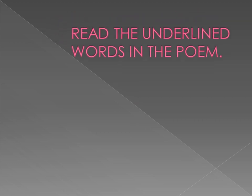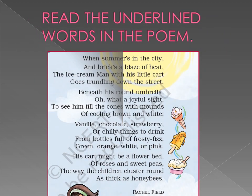Let us read the poem again. 'With mounds of cooling brown and white, vanilla, chocolate, strawberry, or chilly things to drink from bottles full of frosty fizz, green, orange, white or pink. His cart might be a flower bed of roses and sweet peas the way the children cluster round as thick as honeybees.'